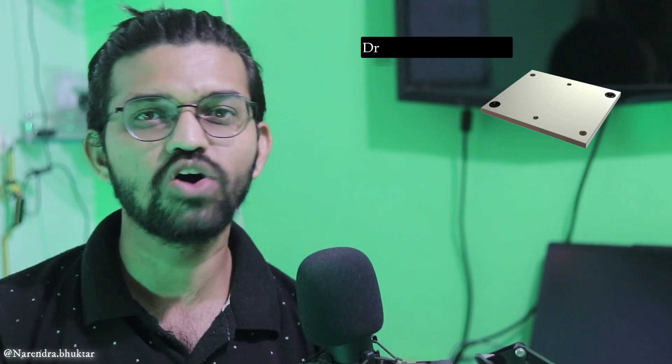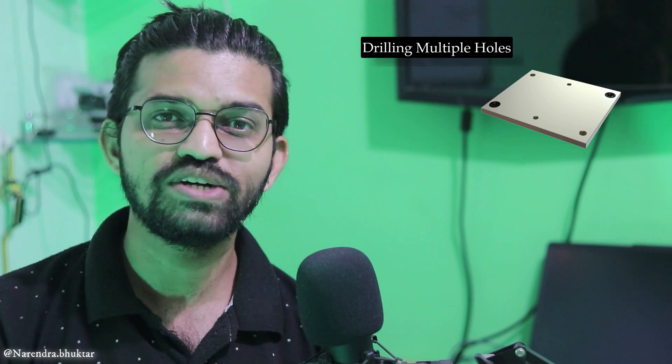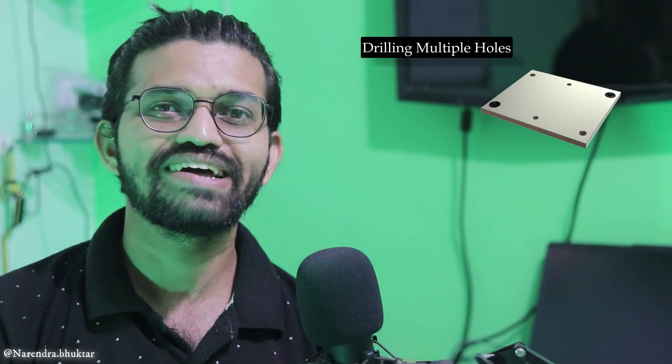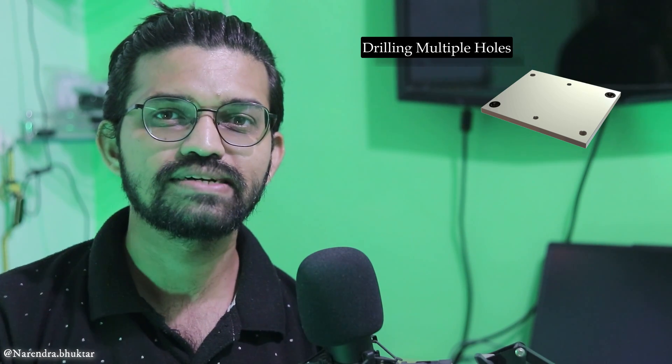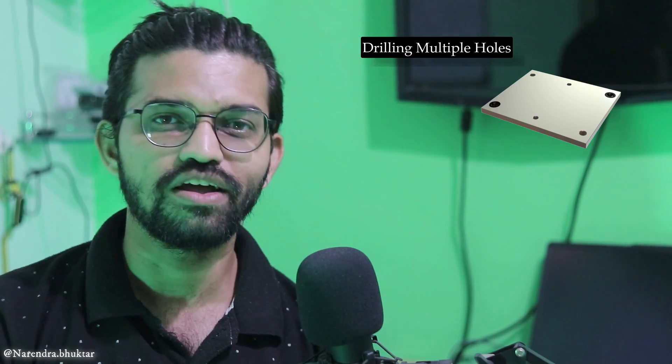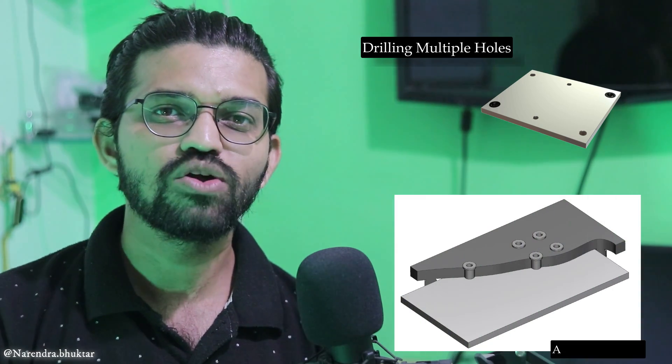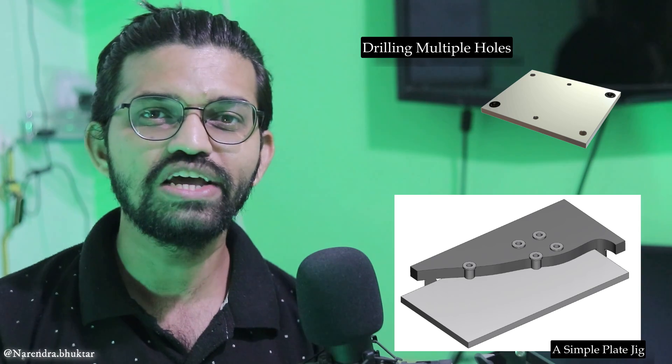Let's take one example. A plate is there, and at different locations on that particular plate you need to carry out a drilling operation. If you do that manually, it requires skilled labor, a lot of precision, a lot of efforts, and a lot of accuracy. First, the worker will do the punching and then drill. But what is the guarantee of the accuracy and precision? Also, the majority of accidents and human errors can occur in manual drilling. But if we make a particular jig for this plate, we can carry out the drilling operations very easily.